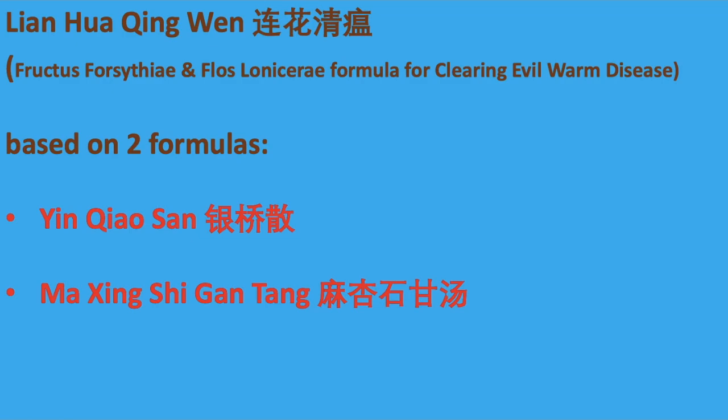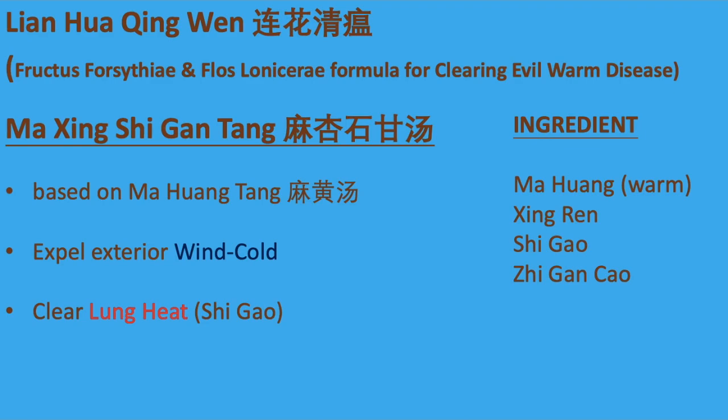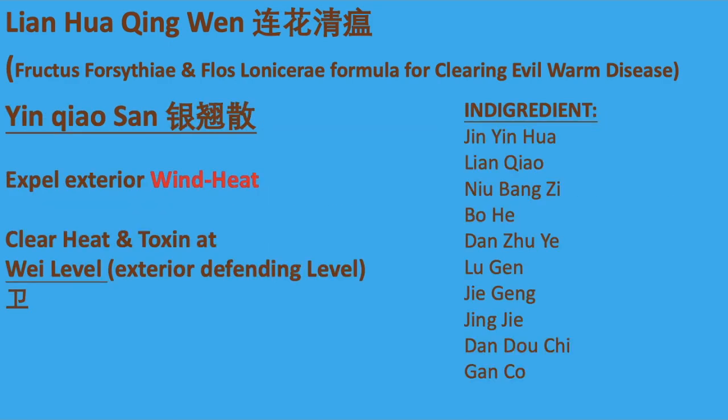Lian Hua Qing Wan is based on two formulas: Yinqiao San and Ma Xing Shi Gan Tang. Ma Xing Shi Gan Tang is based on Ma Huang Tang to expel exterior wind cold and also clear lung heat with Shi Gao. Yinqiao San expels exterior wind heat and clears heat and toxin at Wei level, which is the exterior defending level.